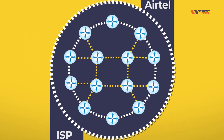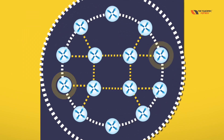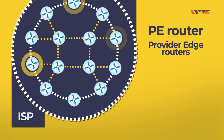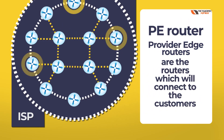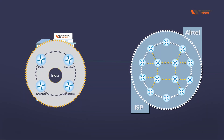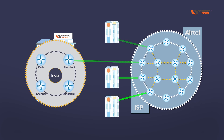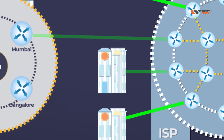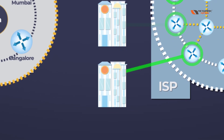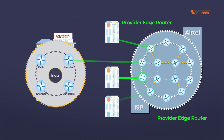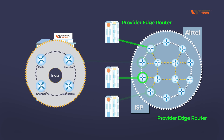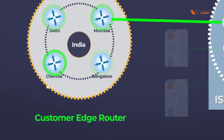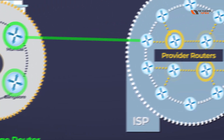So Atel is going to run BGP. Inside an ISP network, certain routers are called PE routers — Provider Edge routers. These are the routers that connect to customers. Since Atel has many customers, the PE routers handle all customer connectivity. The customer's router connecting to the ISP is called a CE router — Customer Edge router. Routers inside the ISP not connected to any customer are called P routers, or Provider routers.